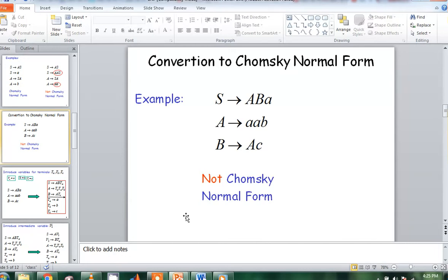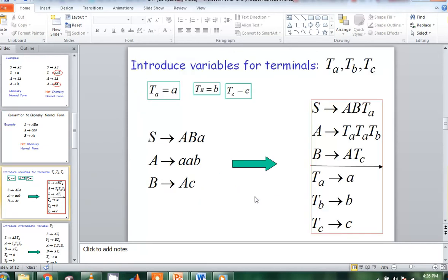Now I will tell you how to convert. The basic problem is this: capital letters are the variables and small alphabets are presenting as terminals. This is not Chomsky Normal Form. Now we convert it. First of all, we introduce the terminal variables.